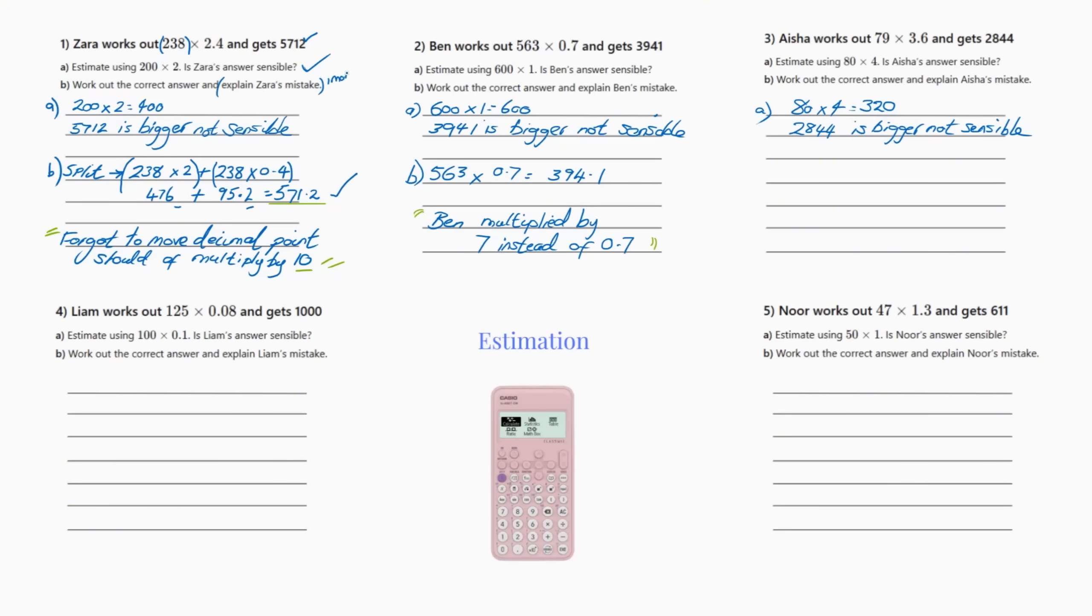So that's all the explanation you need. So when it says explain it, that could be one mark, so it's important to understand what you're doing. So I've done the next one but not as in depth, not as detailed. So Ben works out 563 by 0.7 and gets 3941. Straightforward, he's telling you to estimate it, 600 times 1 is 600.